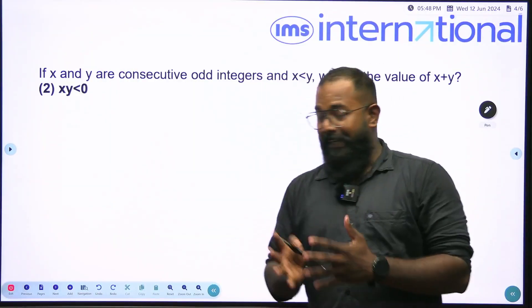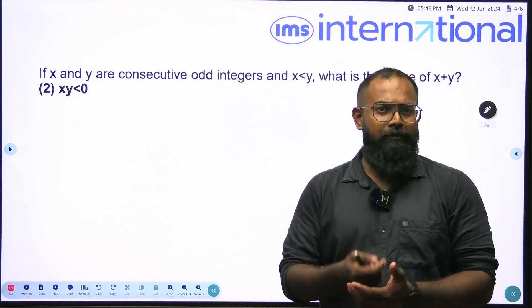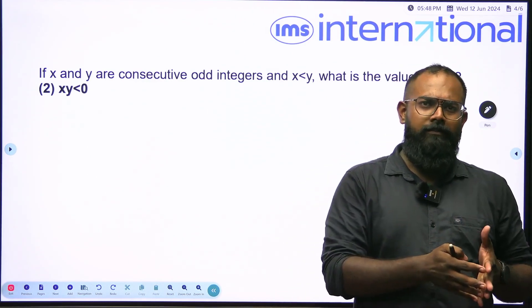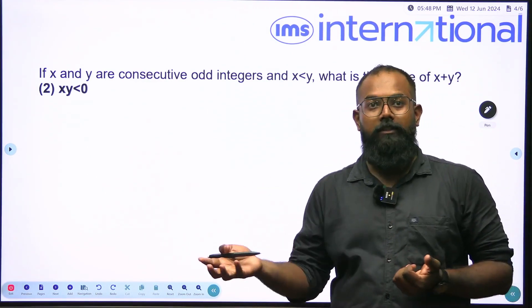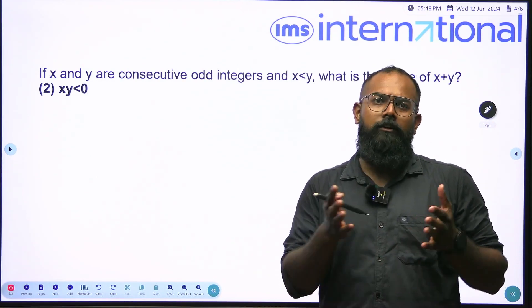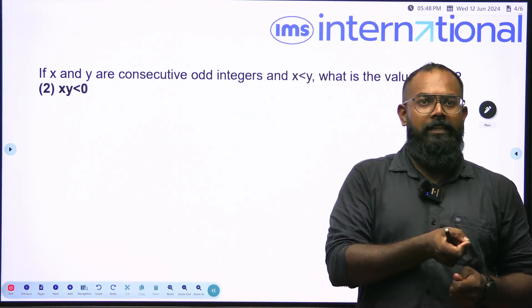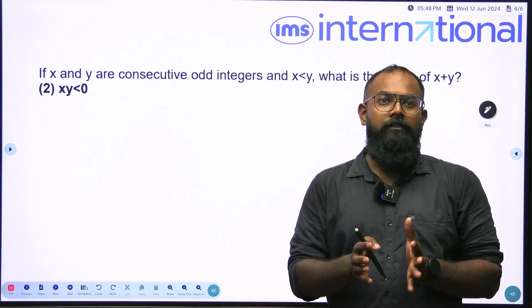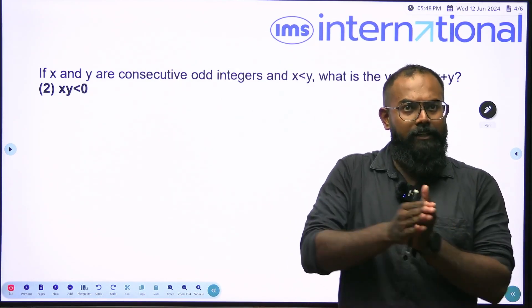Here is the second statement where the product of X and Y is less than 0. That means the product of two numbers is negative. Can both X and Y be positive? No, because product of two positive numbers is positive. Can both X and Y be negative? No, again because product of two negative numbers is positive. That means exactly one of them is negative and the other is positive. And we are searching for a pair of consecutive odd integers in which one is negative and the other is positive.